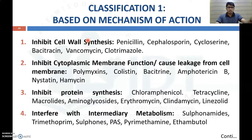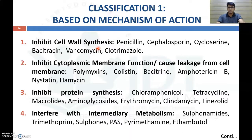The first class of drugs, according to mechanism of action, are drugs that inhibit cell wall synthesis. The cell wall is the outermost layer and prevents leakage of essential materials from inside the microorganism. By inhibiting cell wall synthesis, these drugs cause killing either by leakage or directly. Examples are penicillin, cephalosporin, cycloserine, bacitracin, vancomycin, and clotrimazole.